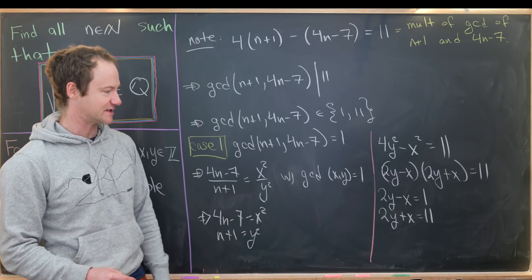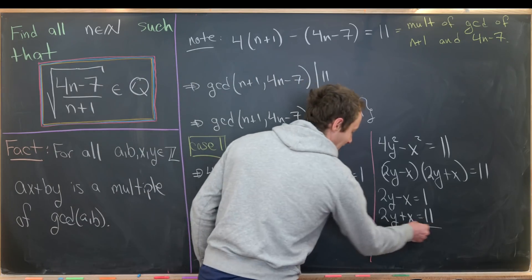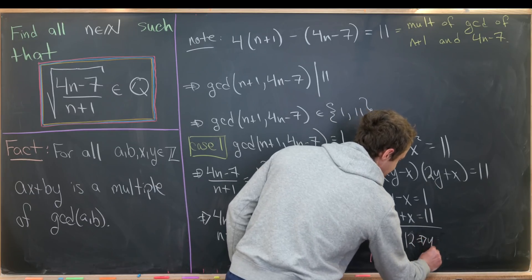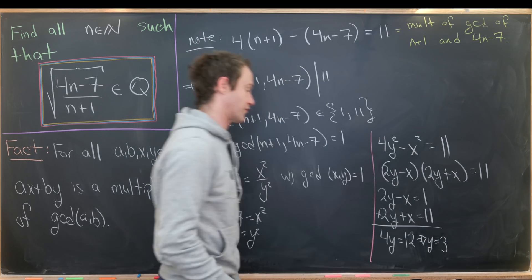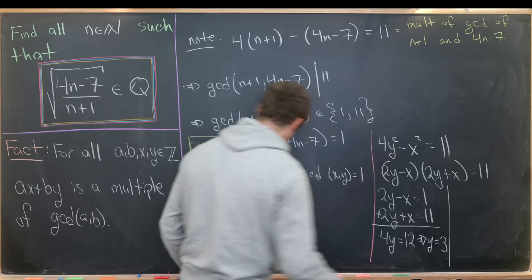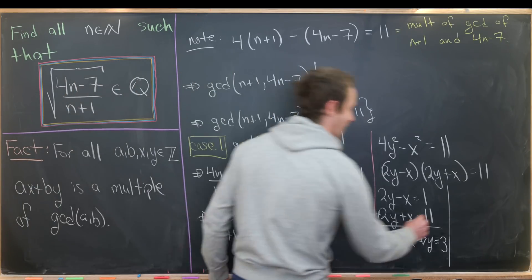Okay, so how can we easily solve for y? Maybe we'll add these two equations. Notice that gives us 4y = 12, in other words it gives us y = 3. But now if y = 3, what do we have? We have n = 8.